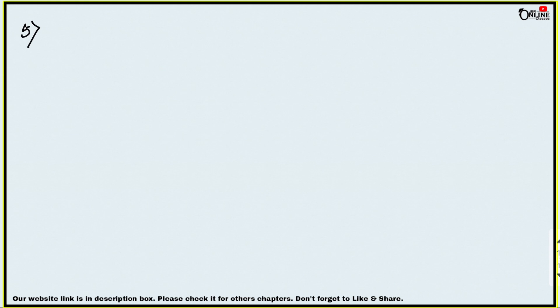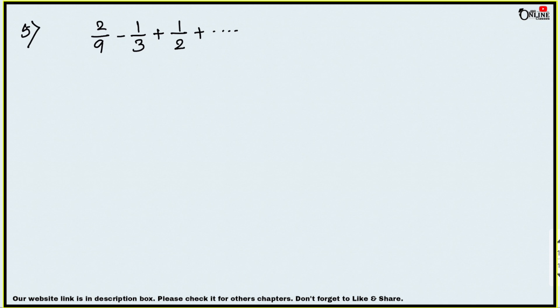In sum number 5: how many terms of the series 2/9 − 1/3 + 1/2 + ... will make the sum equal to 55/72? That means Sn = 55/72. It's a very easy problem — you have to find out the value of n.